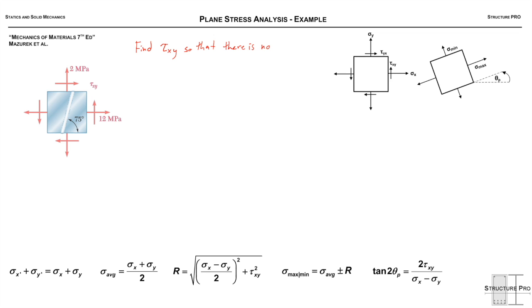We're given this stress state here with a weld across it at an angle of 75 degrees. We're asked to find the shear stress τ_xy in this current orientation so that there is no shear stress on the weld.